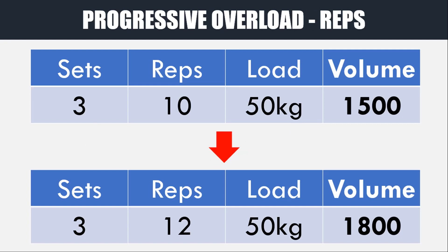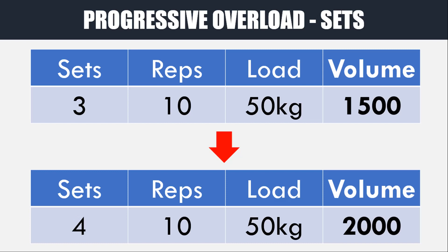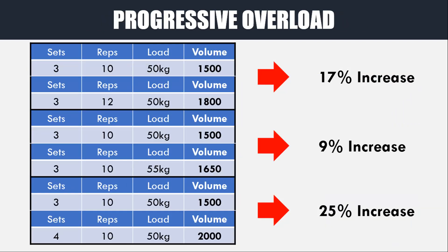For example, going from three sets of 10 at 50 kilos to three sets of 12 at 50 kilos. The second is to increase load while maintaining the number of reps and sets — for example, going from three sets of 10 at 50 kilos to three sets of 10 at 55 kilos. Or we could increase the number of sets while maintaining the reps and load — for example, progressing from three sets of 10 at 50 kilos to four sets of 10 at 50 kilos. All of these methods will increase the total volume load produced by the muscle groups, thereby increasing our total mechanical tension and providing a driving stimulus for muscle hypertrophy.